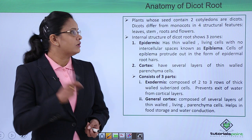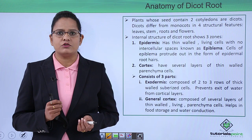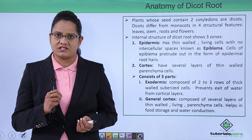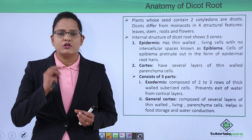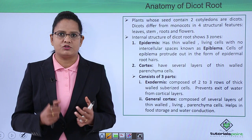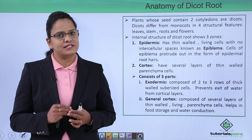Before we move on to the anatomy of the dicot root, let us first understand monocots and dicots. Monocots have only a single cotyledon (seed leaf), while dicots have two cotyledons. Visually, monocots are generally herbaceous like maize and sugarcane, while dicots are big trees like neem and peepal. The basic organs in which they differ are the leaf, stem, flower, and root.